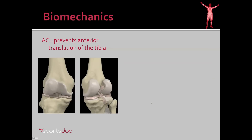In contrast, the ACL prevents anterior translation of the tibia, and the PCL prevents posterior translation. To summarize: the ACL and PCL prevent anterior-posterior translation, while the medial and lateral collateral ligaments prevent side-to-side motion of the knee.